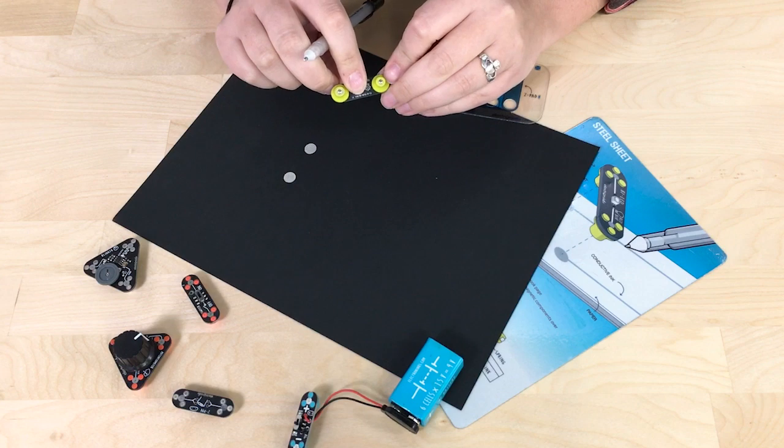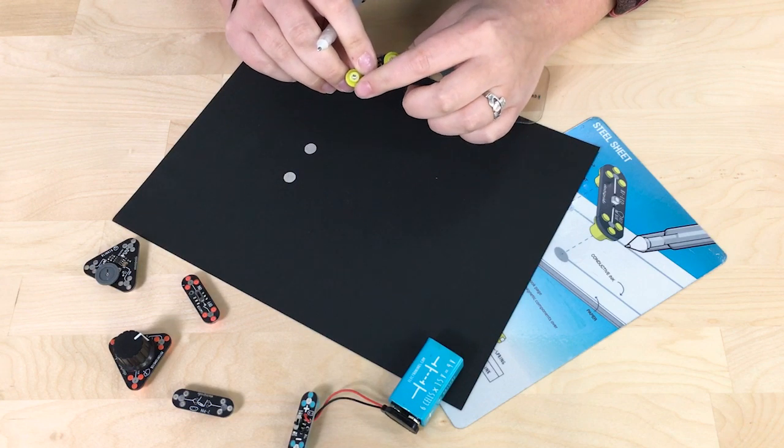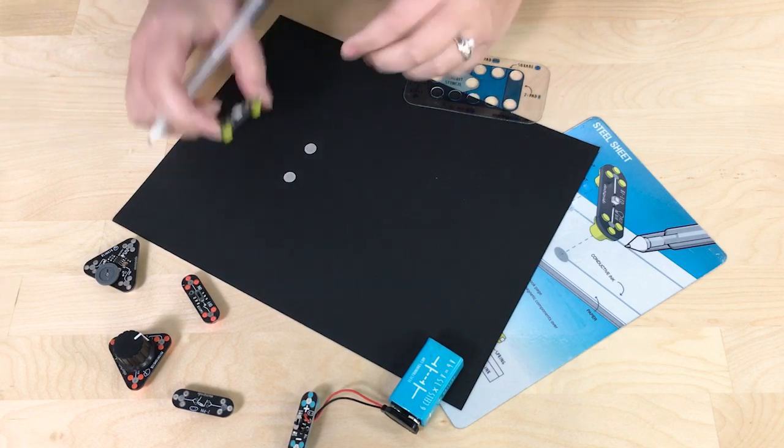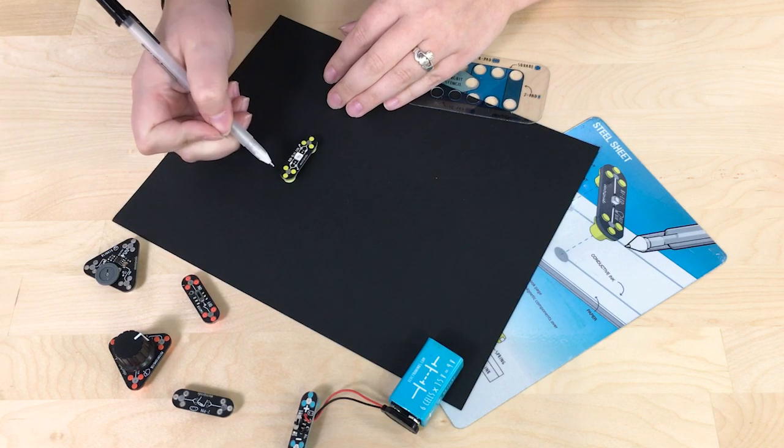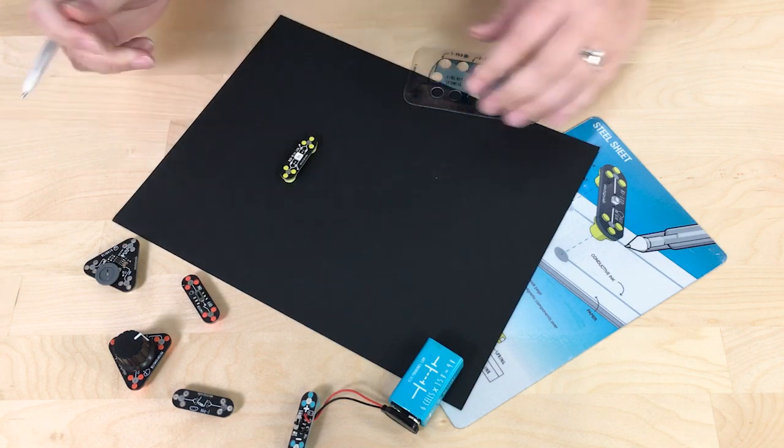The magnets on the bottom of the BiLED are conductive and I have conductive ink, so when I put it right there I'm going to be able to put current through the LED.